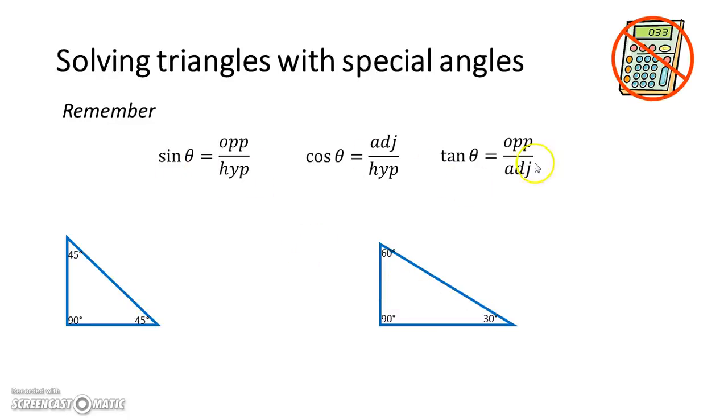You need to remember your basic sine, cosine, tan trigonometric ratios. Let's have a think about 45, 45, 90 triangles. Basically it's like half a square. If you continue those sides up there, you get a square, cut in half.